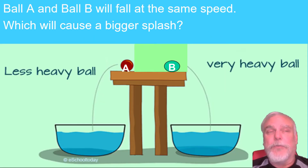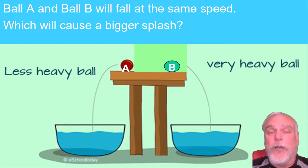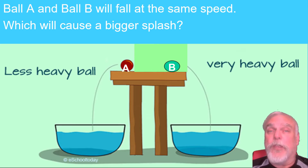Now let's shift gears a little bit. Let's take a look at this scenario: we have two balls, ball A and ball B, on a platform. If we knock both of them off at the same time, which ball — A or B — is going to cause a bigger splash in the buckets of water?